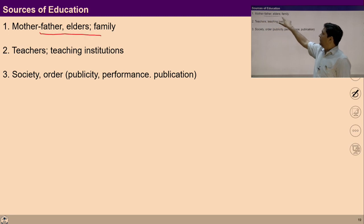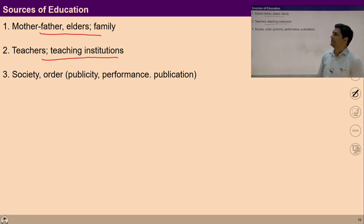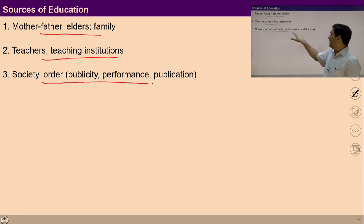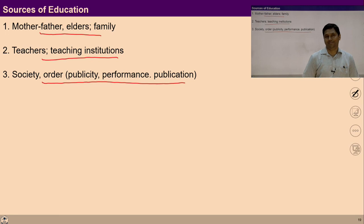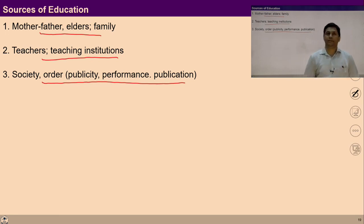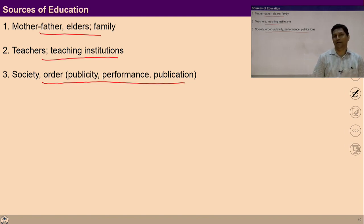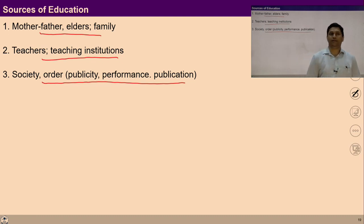The sources of education for a child are: mother, father, elders, family members, teachers, teaching institutes, society, order, and various media. All these are the sources of education for a child. With this environment, the child wants to learn and know everything, and we can help the child with the feeling of affection and guidance.